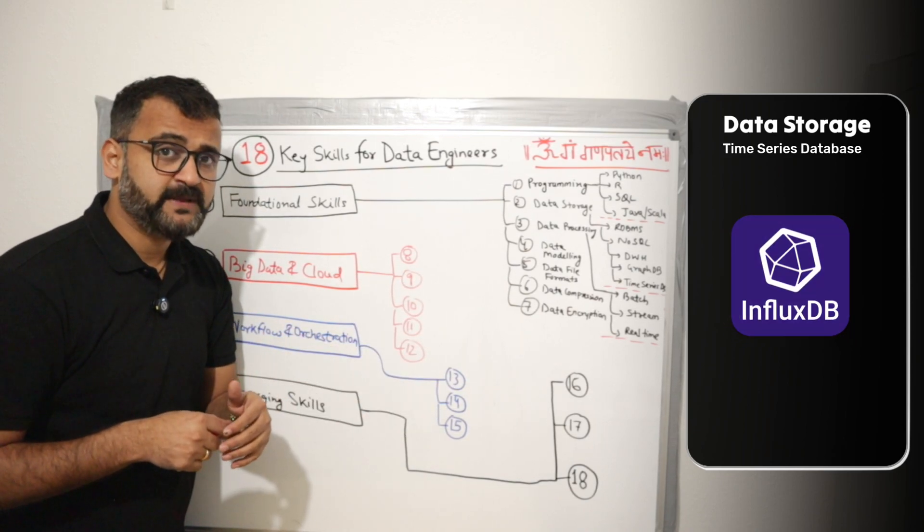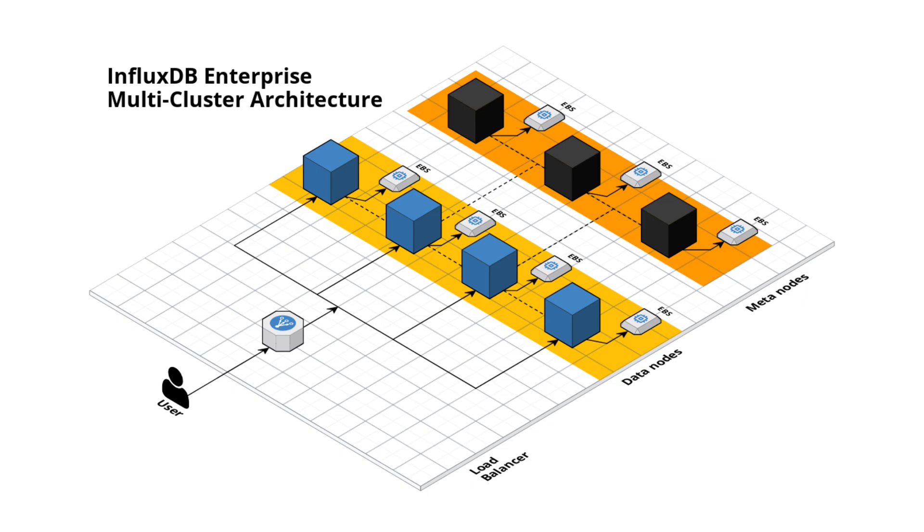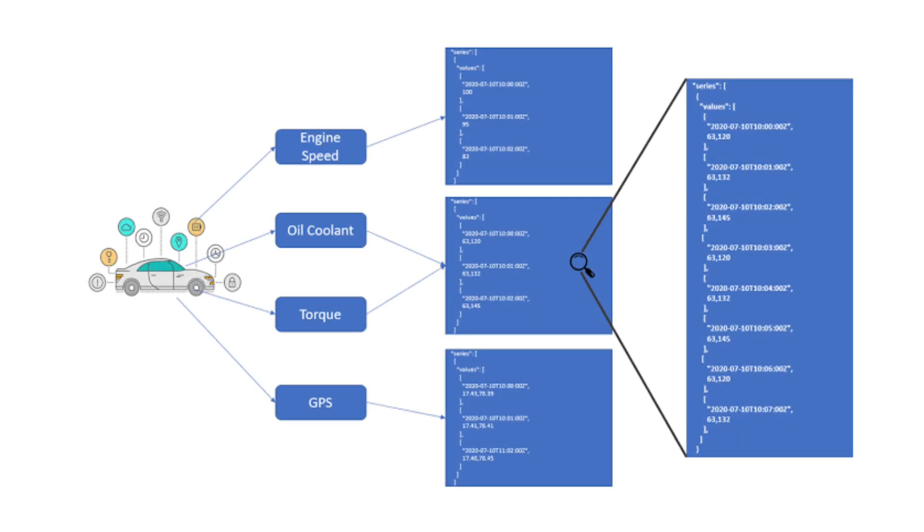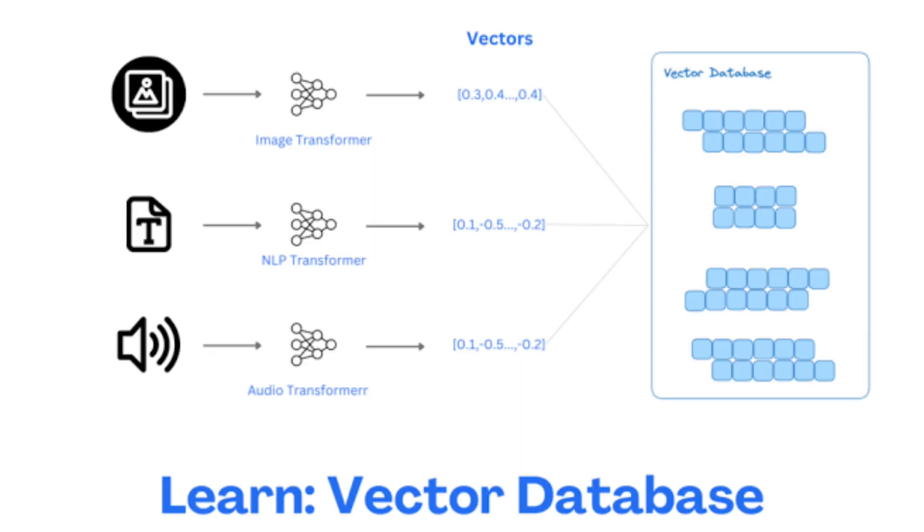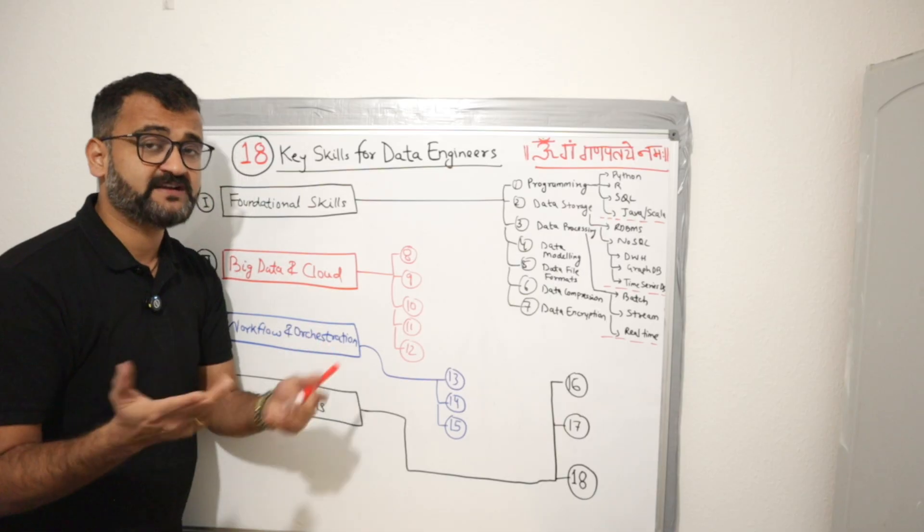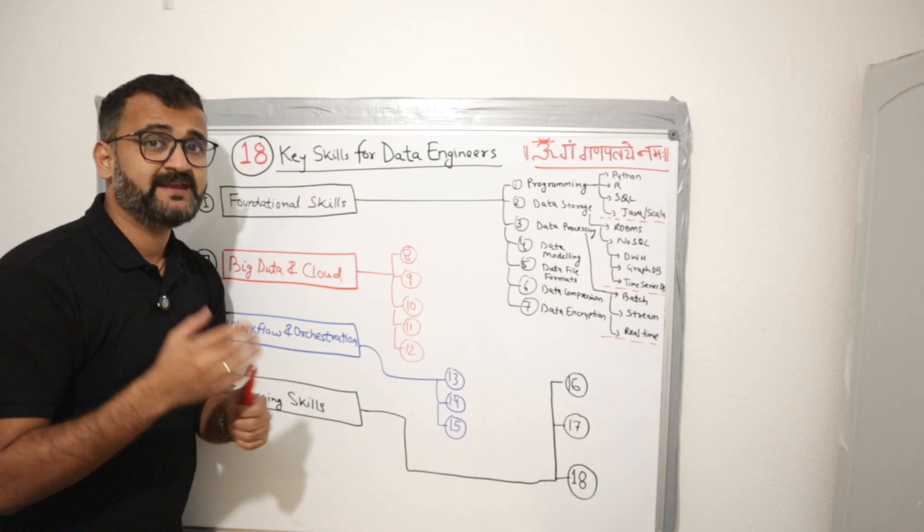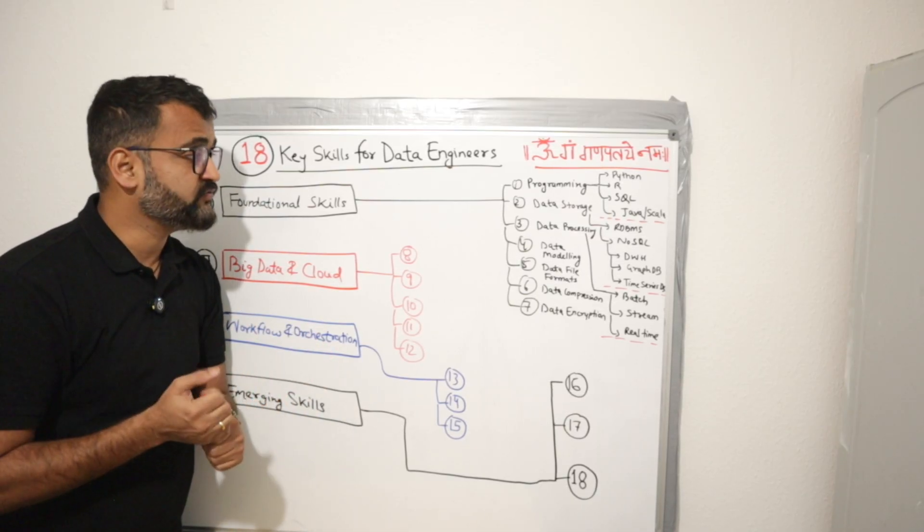Time series database is also becoming really important. For example, InfluxDB stores data in time series format. So that's very important. And vector databases are again becoming very famous. I have missed it here, but vector databases are now used in AI and ML and Gen AI use cases.